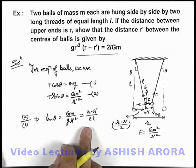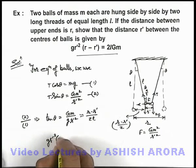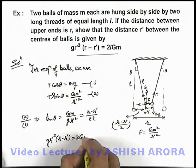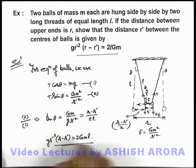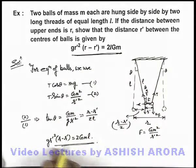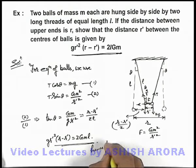If we just rearrange these terms, you can see we are getting g r'²(r - r') is equal to twice of G m l, which is exactly the same situation which we are required to prove. So this is the same expression. We can simply state it is hence proved.